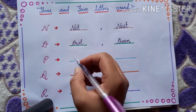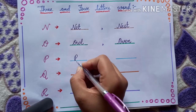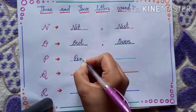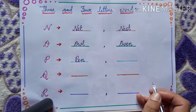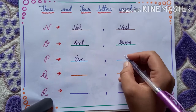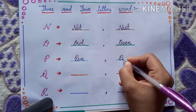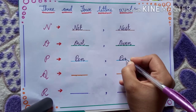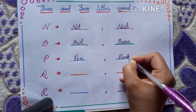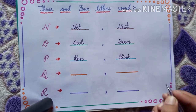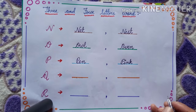Next, P. P, E, N — pen. Pen. P, I, N, K — pink. Pen. Pink.